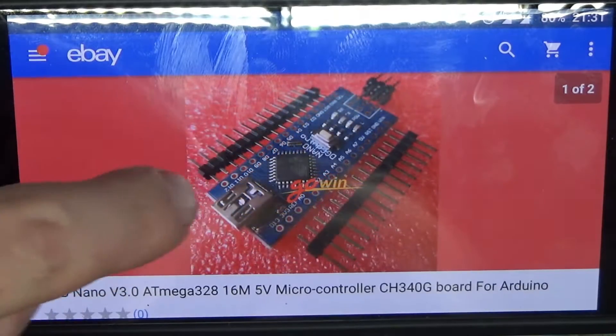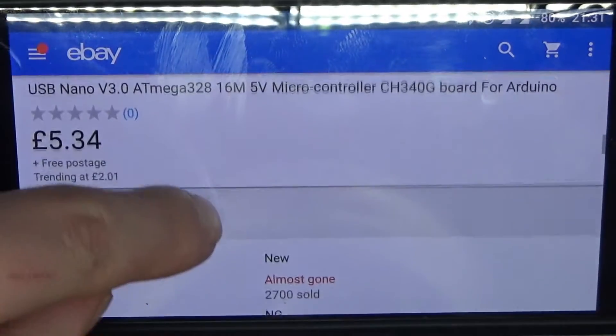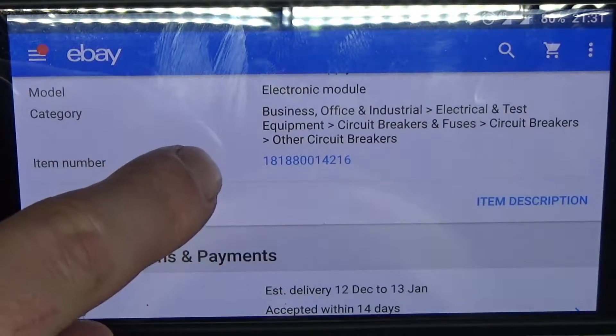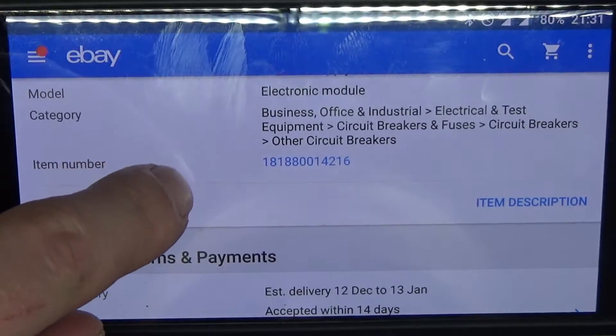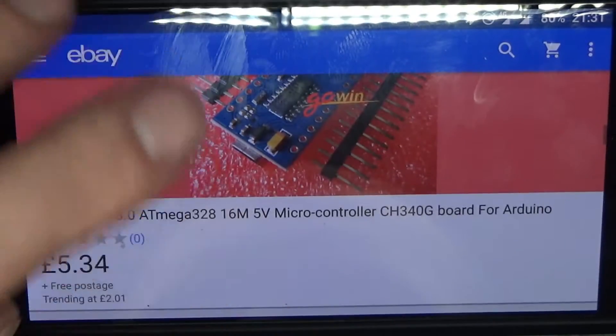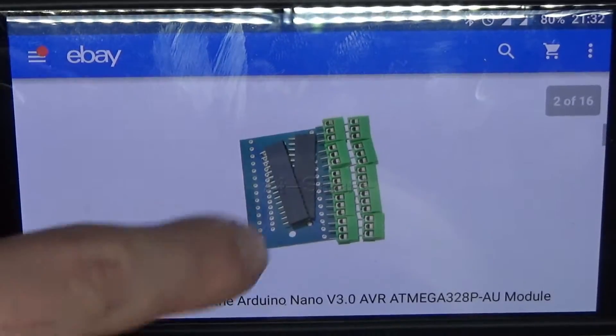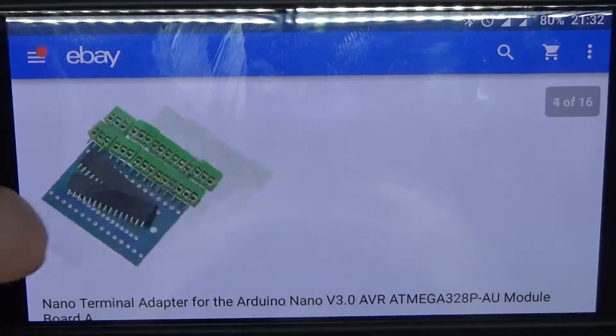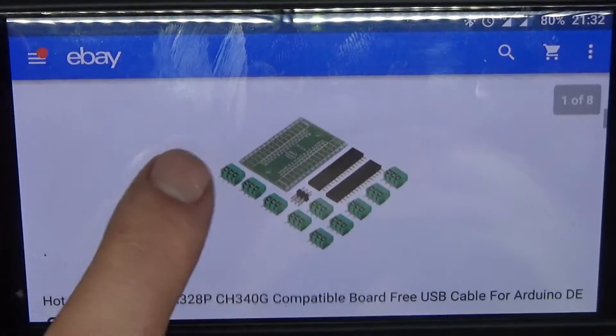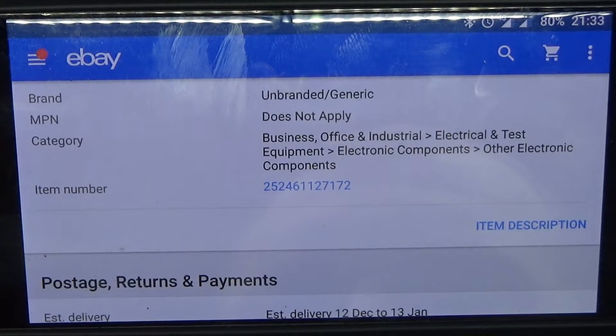And this one has the CH340G controller for communications. Item number 181880001421, £6.34 for three of them. And here is the first of the adapter boards, this one was 99 pence. As you can see, it's just a board with a bunch of terminal blocks and this is what it should look like assembled. And this is the second one.